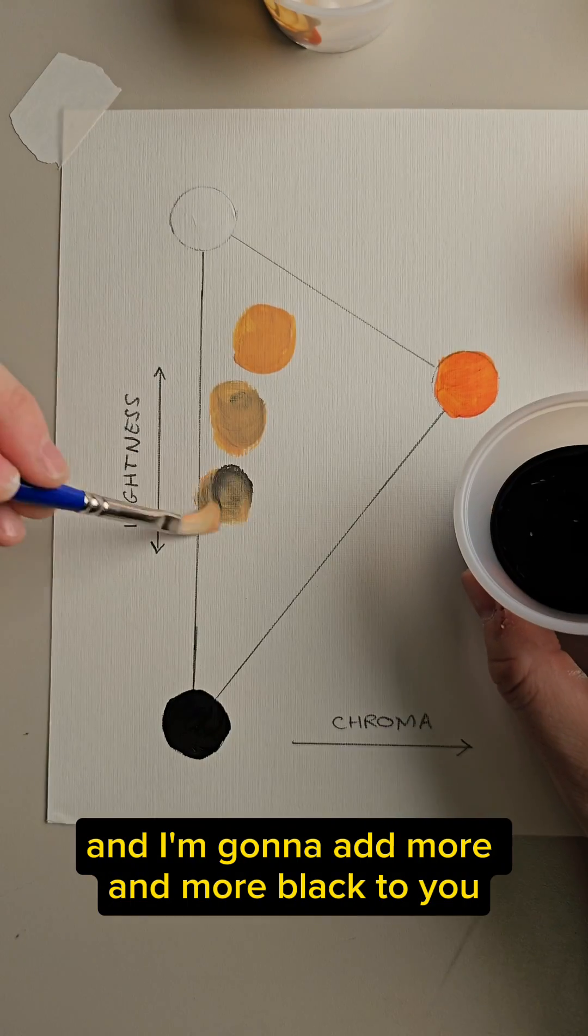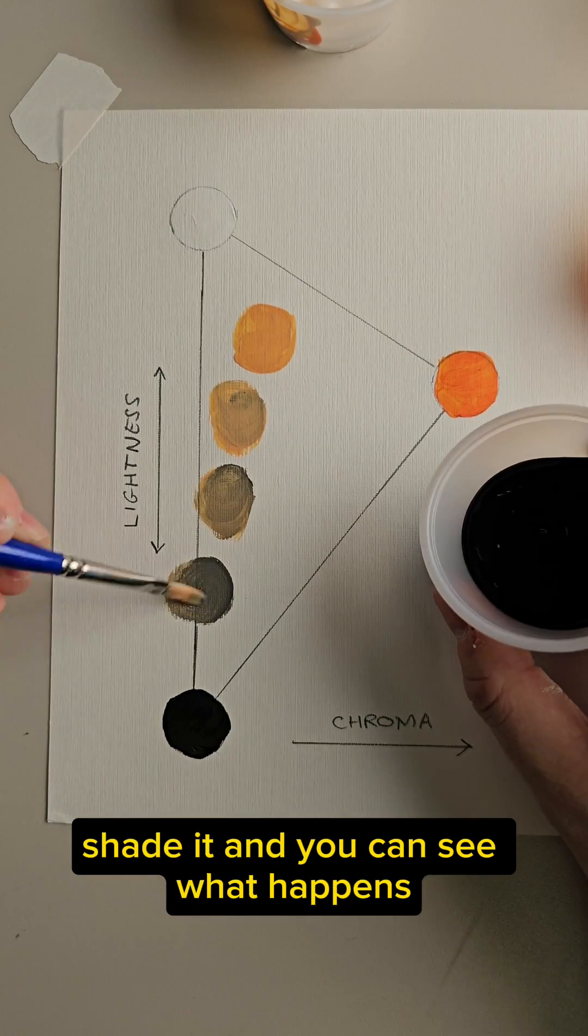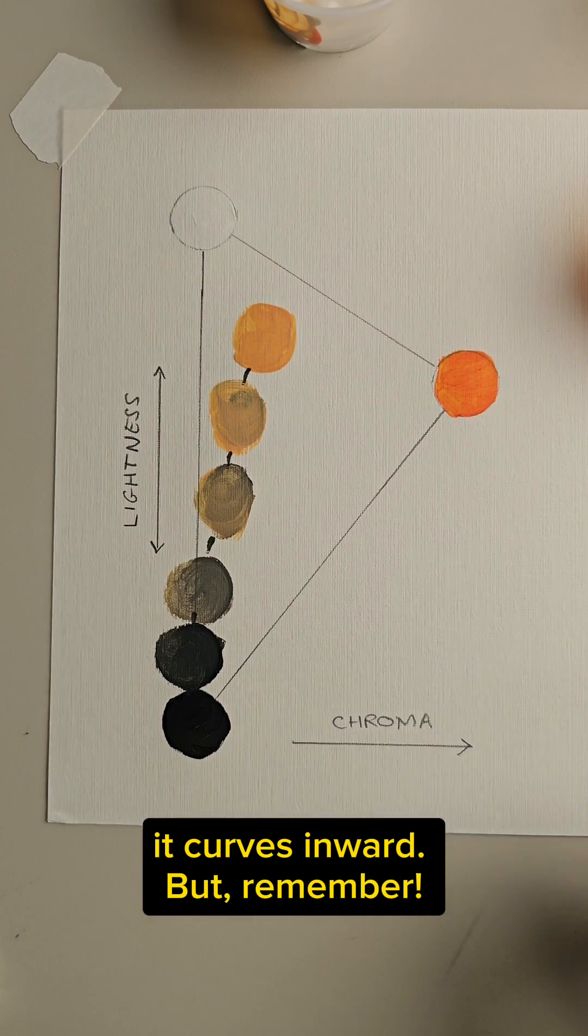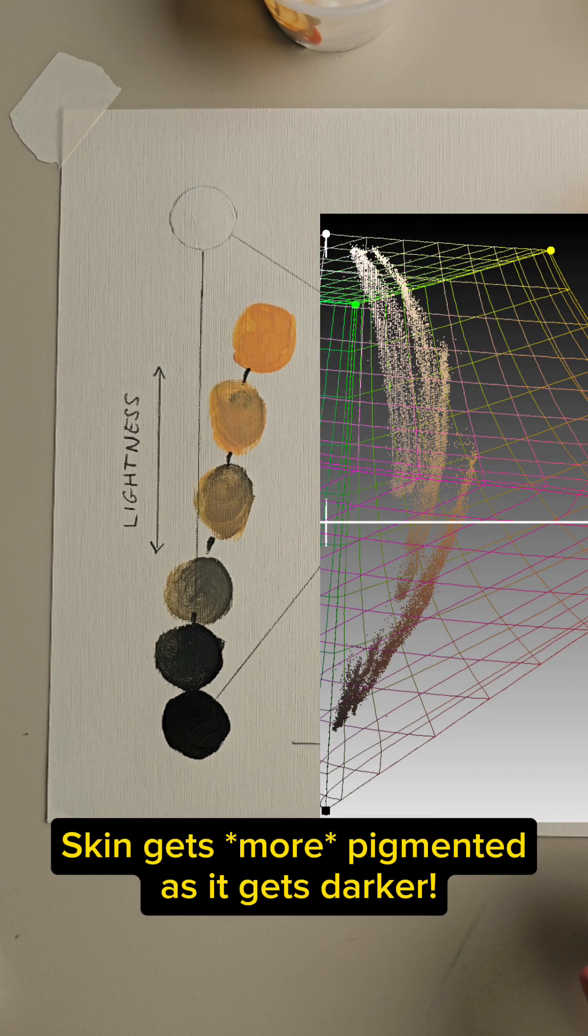and I'm going to add more and more black to shade it, and you can see what happens. It actually gets grayer as it gets darker. It curves inward. But remember, skin gets more pigmented as it gets darker.